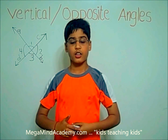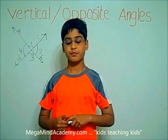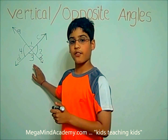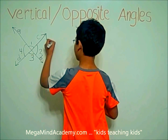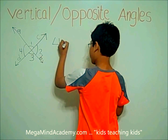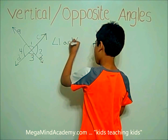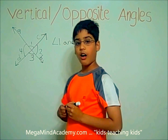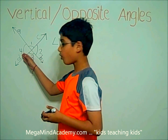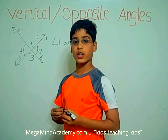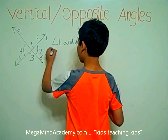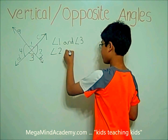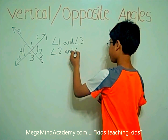So let's find the vertical angles. Angle 1 and angle 3 are opposite to each other, so they are vertical angles. Angle 2 and angle 4 are opposite to each other, so they are vertical angles too.